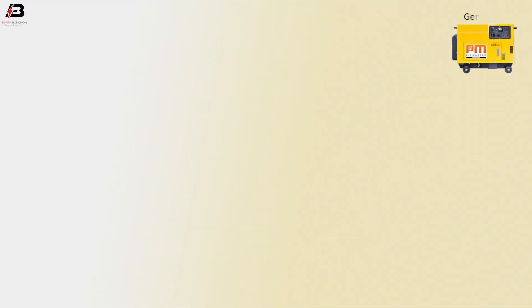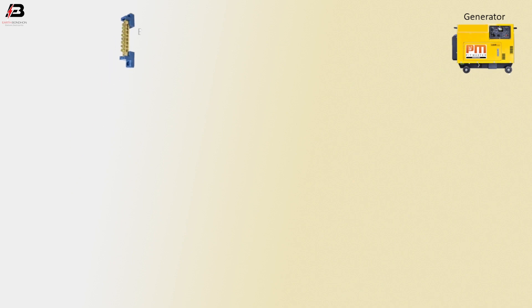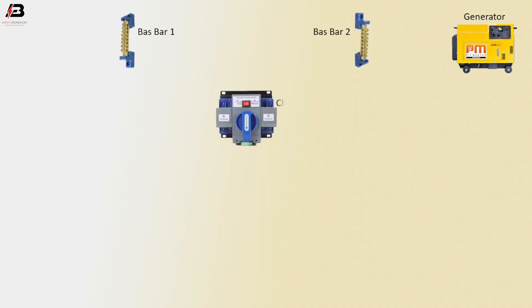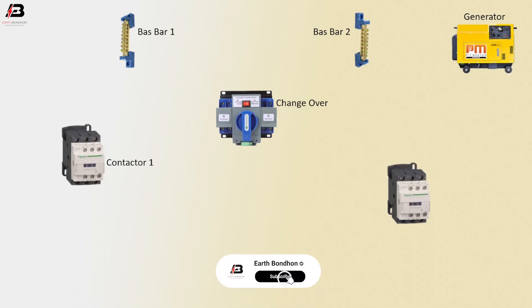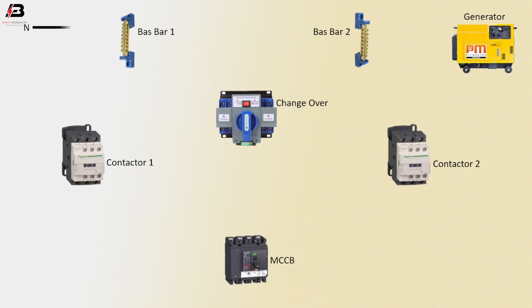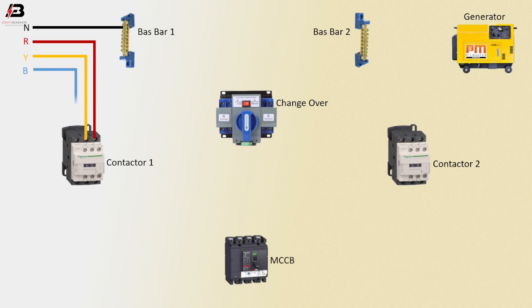Let's start. Power, generator, bus bar one, bus bar two, changeover, magnetic conductor one, magnetic conductor two, MCCB circuit breaker. Neutral connection to bus bar one. Phase connection to magnetic conductor one L3 terminal. Second phase connection to magnetic conductor one L2 terminal. Third phase connection to conductor one L1 terminal.